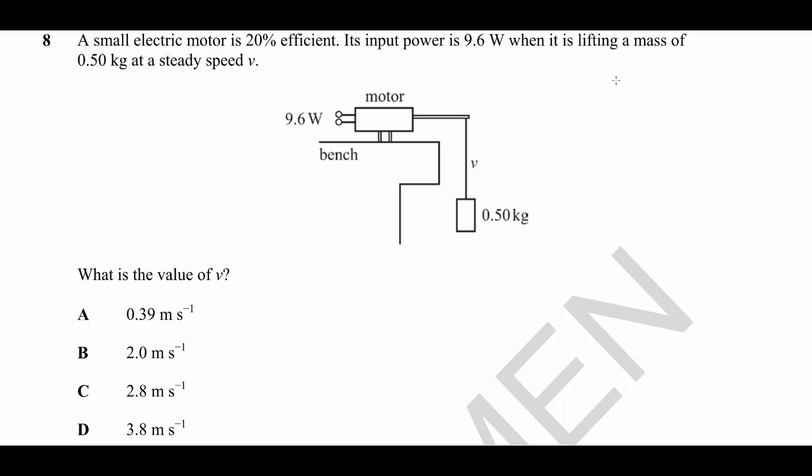Now the equation we need here is power is equal to force multiplied by velocity. We know that the upwards force here needed to lift this object at a constant velocity is going to be equal to the weight acting down. So our force is equal to MG, which is 0.5 times 9.81.